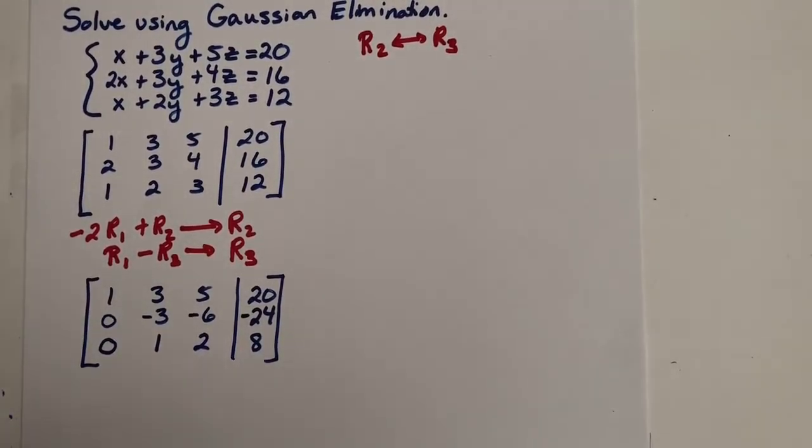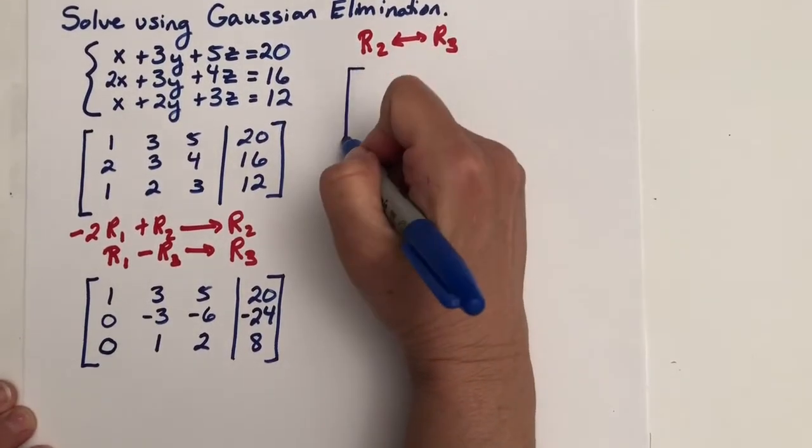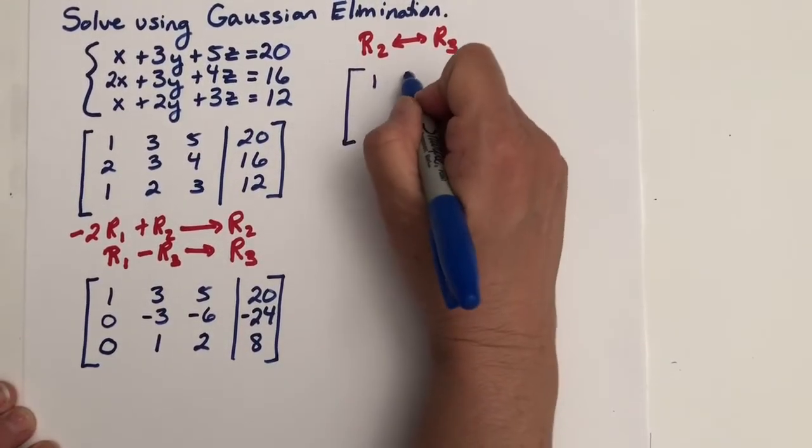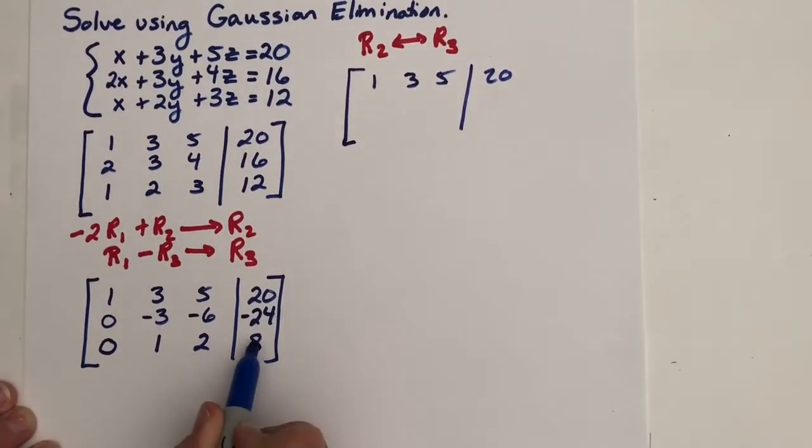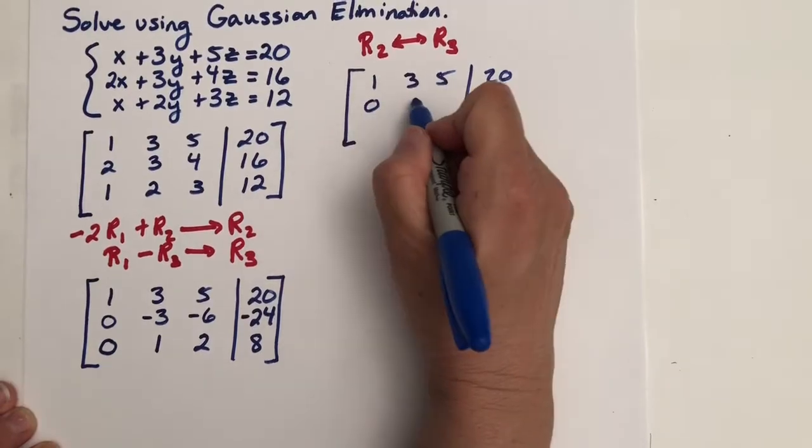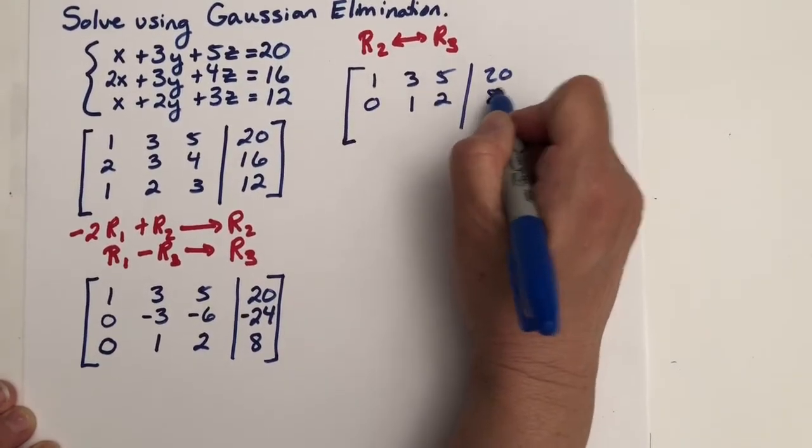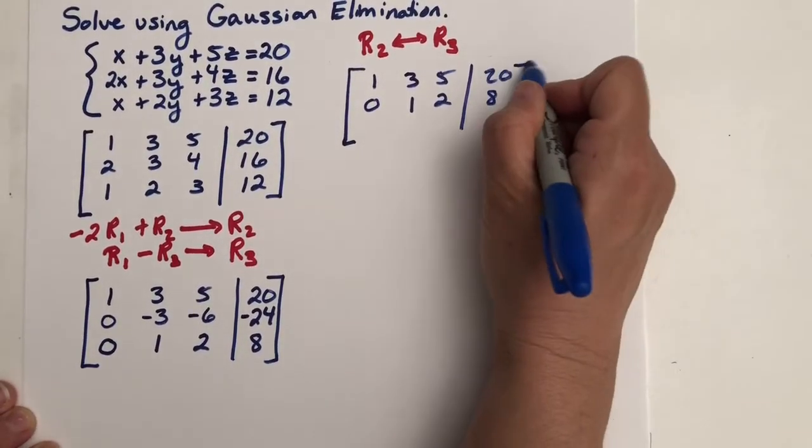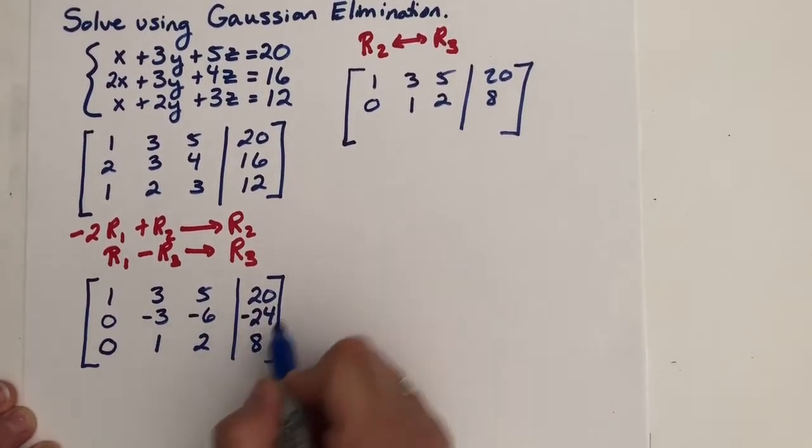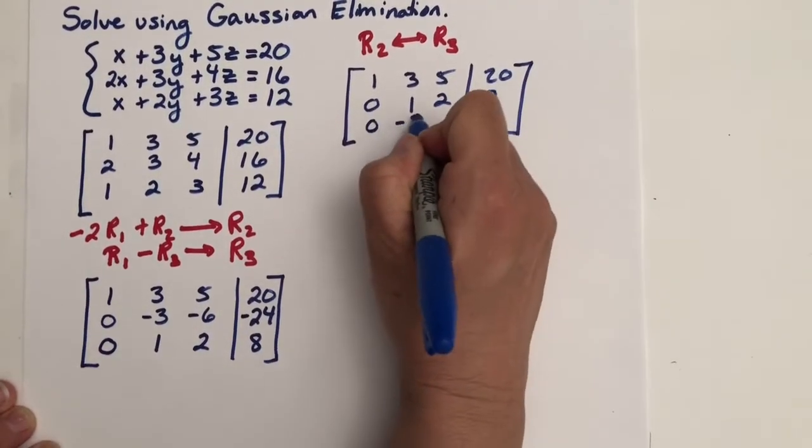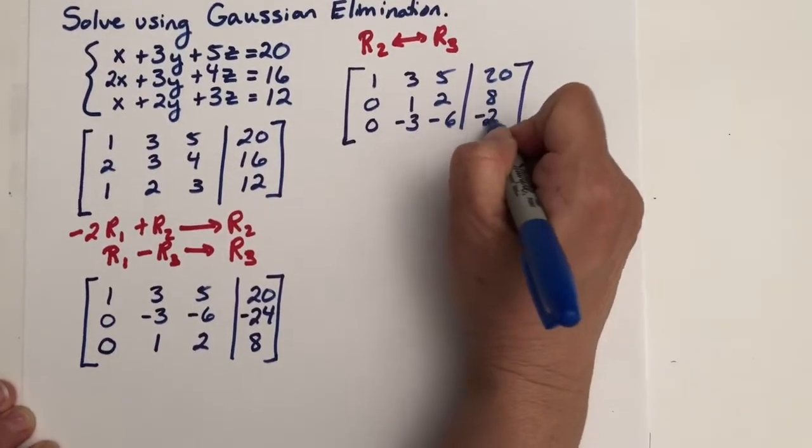So I'm just going to switch. So here's my elementary row operation. I'm going to switch row 2 and row 3. When I just switch two rows, I figure the chances of me making a mistake are reduced. So let's put them in. We have 1, 3, 5, 20. And now row 3 is becoming row 2. So it's 0, 1, 2, 8. And this row that was in row 2 is going to row 3. So I have 0, negative 3, negative 6, negative 24.